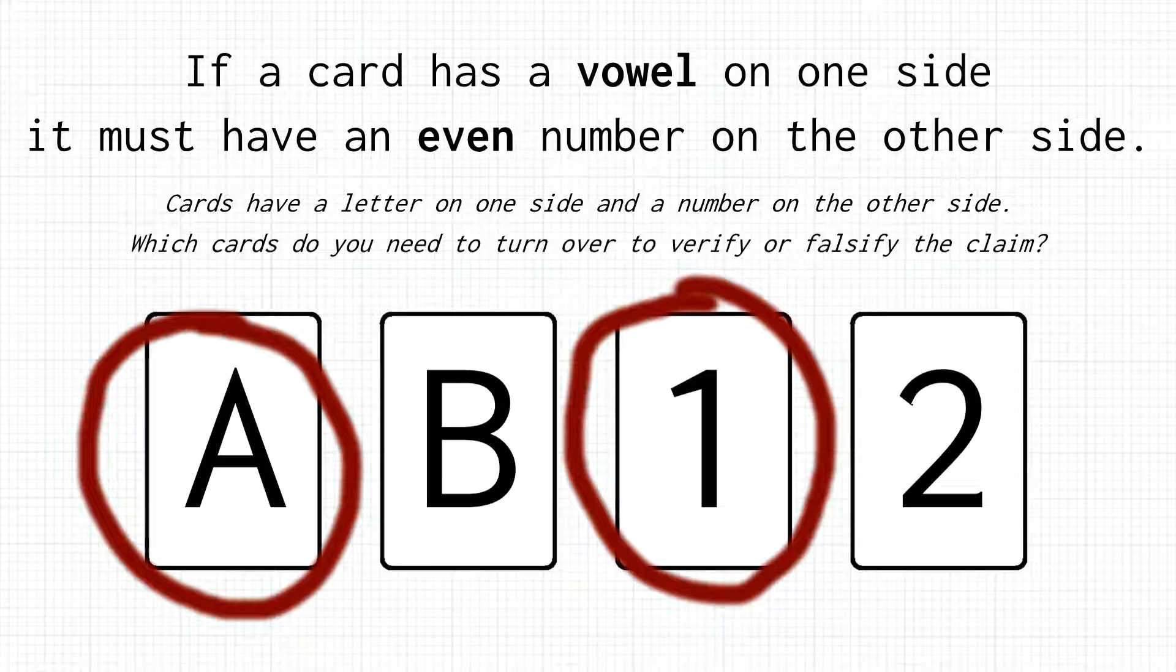What about the B? The rule never mentions consonants, so a consonant can have either an even or an odd number on the other side. We just do not need to check. Turning over the 2 or the B means falling for one of the logical fallacies explained using European countries earlier.